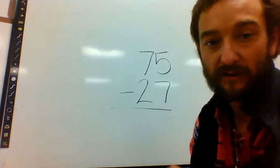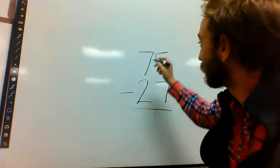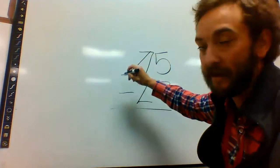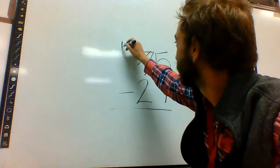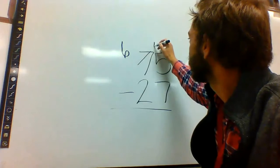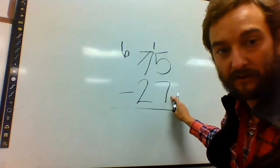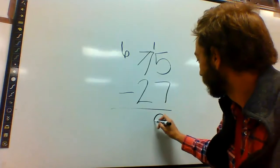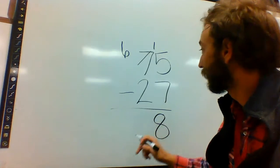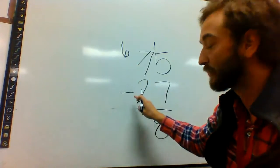So this 5 is smaller than the 7. So you've got to go over here. Take out a 10 from your 7. That becomes 6. Now this is 15. 15 minus 7 is 8. Then you have 6 minus 2 is 4.